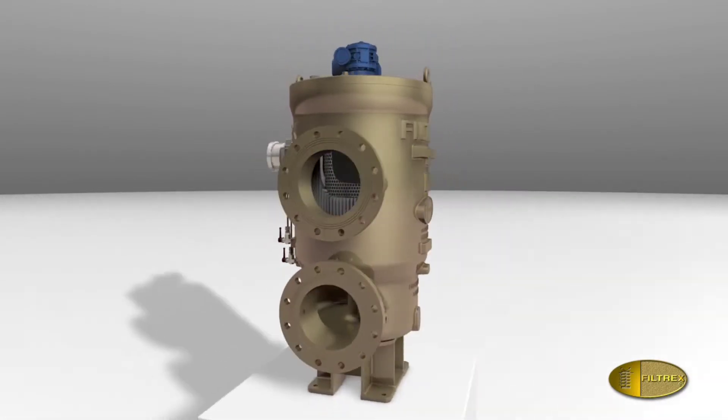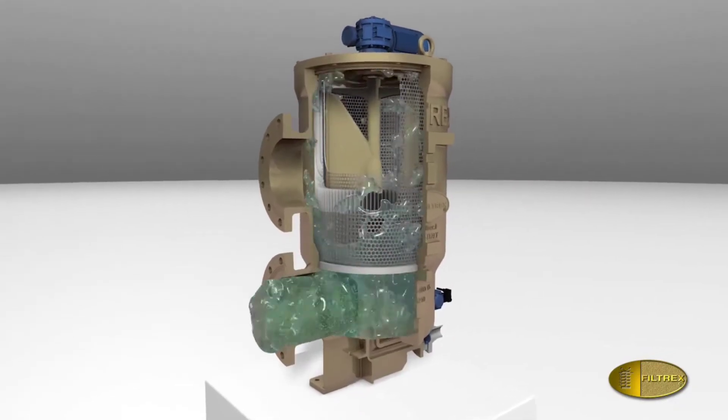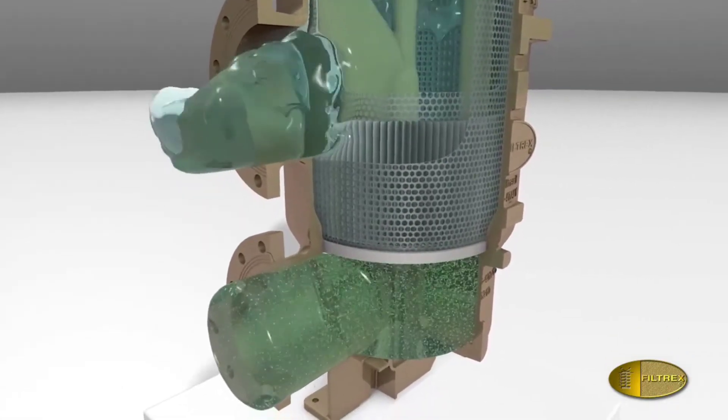The water enters from the inlet connection and flows through the wire mesh sectors of the filtering element. The water, filtered from inside to outside, exits through the outlet connection.